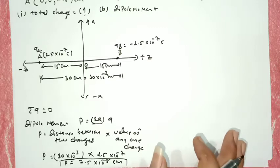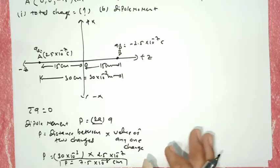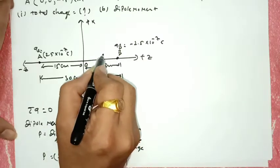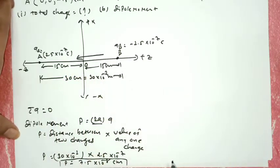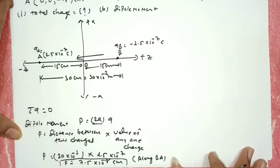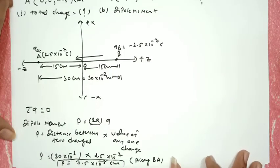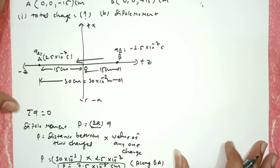The direction of dipole moment is from negative to positive charge, as studied in theory. So the dipole moment direction is from B to A, i.e., along the negative Z direction. This completes Numerical 9.